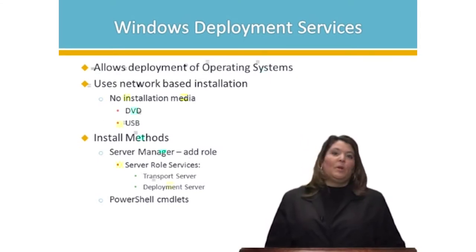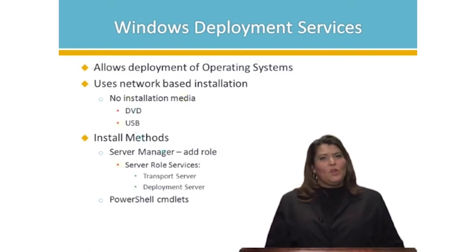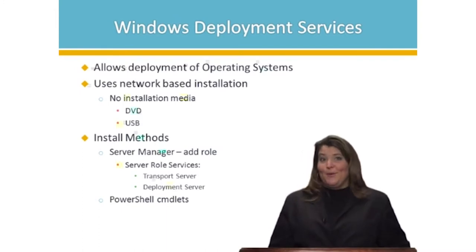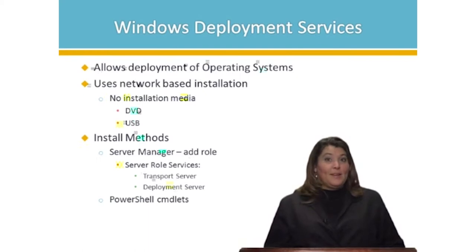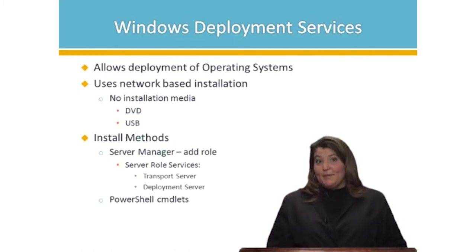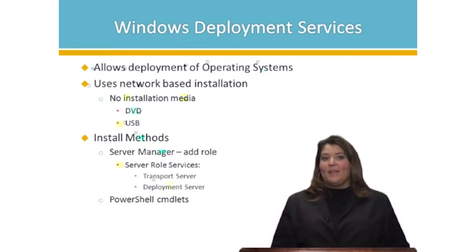In order to get Windows Deployment Services on your server, the first thing to note is it takes a little bit of planning. The role itself doesn't take a whole lot of disk space or time to install. The part you have to plan is that it has to be on an NTFS partition in order to store those images. Those images take a lot of space, so think through what you'd use this for and where your storage is. The install itself is easy — the planning and making sure it's on the right server with the right amount of speed and space is the more difficult part.